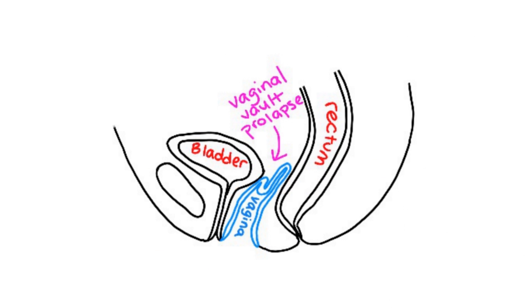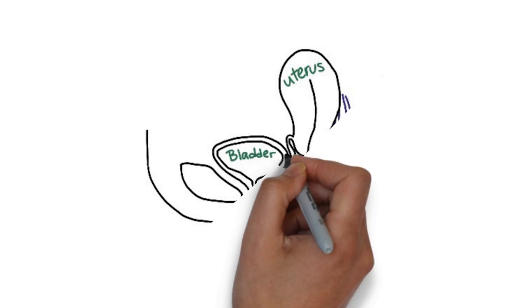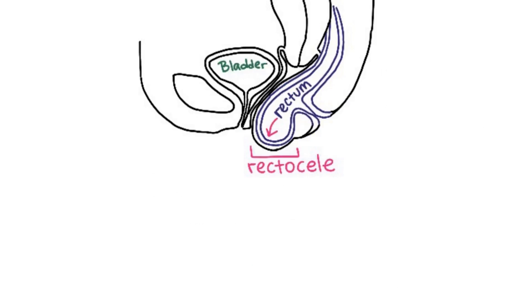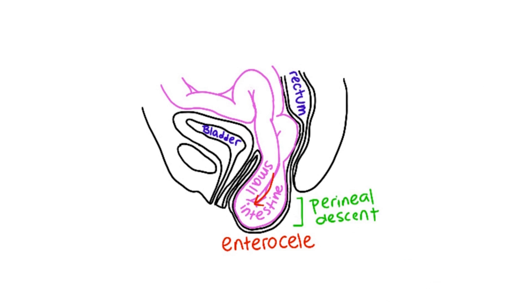Vaginal vault prolapse is the prolapse of the apex of vagina, which can occur after hysterectomy. Rectocele is the prolapse of the rectum. Enterocele is a prolapse of small bowel. And perineal descent is a prolapse of perineum.